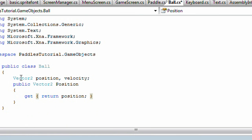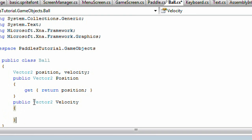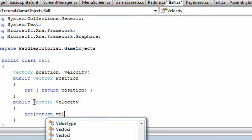And we'll get return lowercase position. And the property has an uppercase P for position. And then the other property will be public Vector2 capital V Velocity. Get return lowercase velocity.